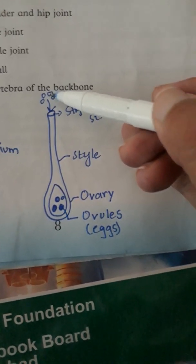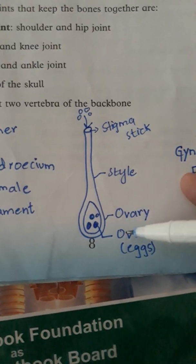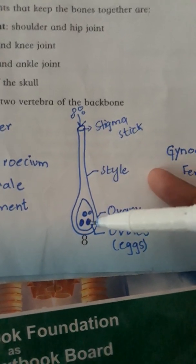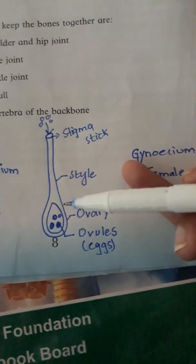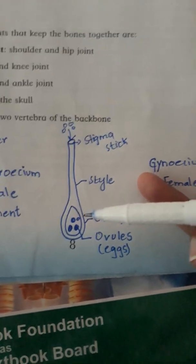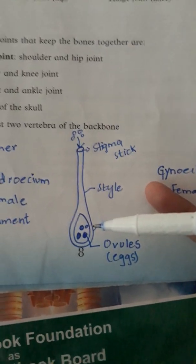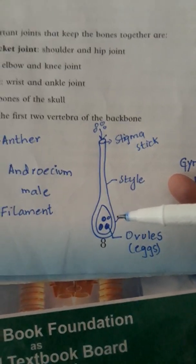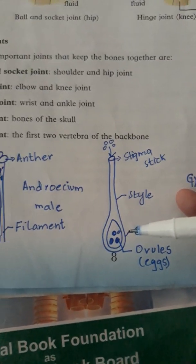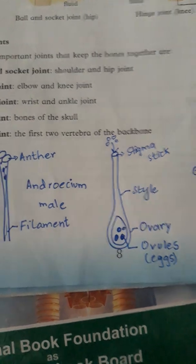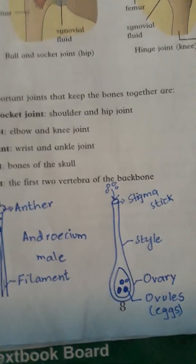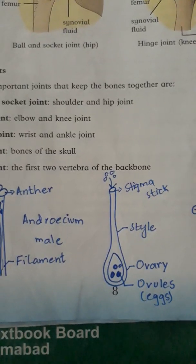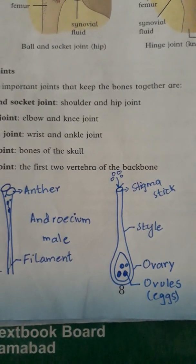The fusion of pollen grains and eggs will gradually form a new plant. Now we will do the reading and everything will become clear.